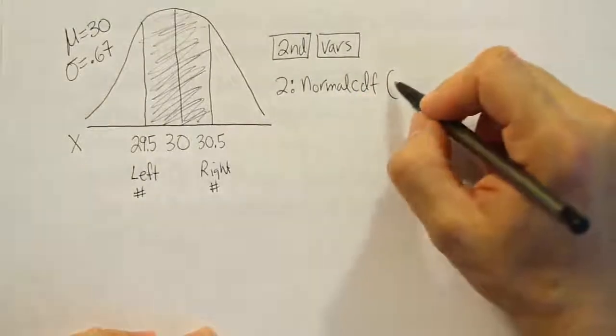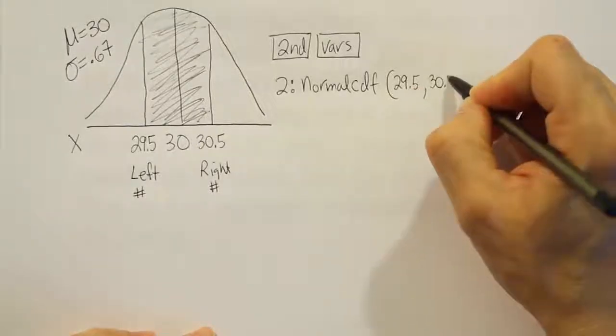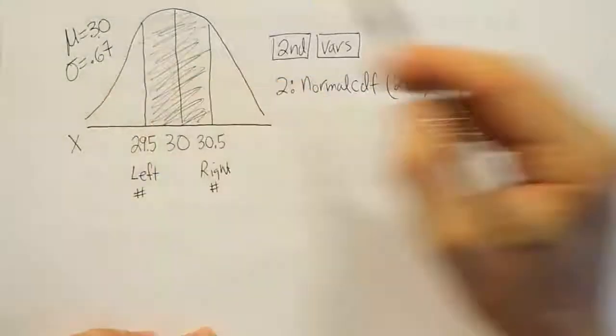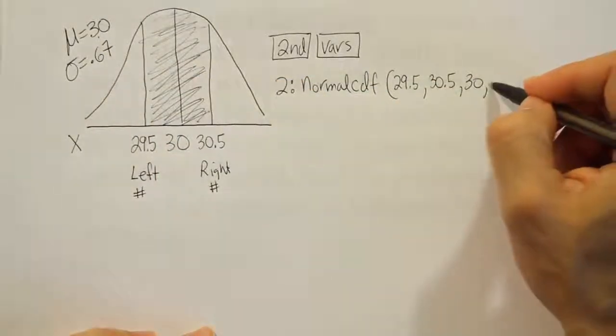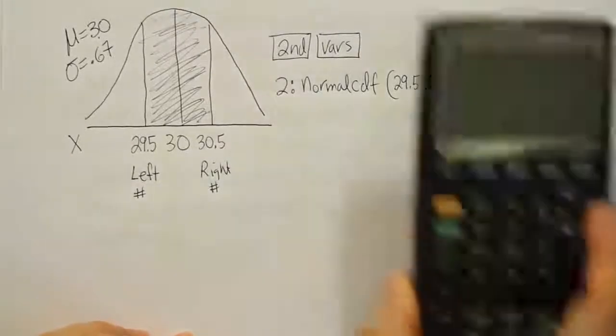Then enter in the left number, which is 29.5, comma the right number, which is 30.5, comma the mean, which is 30, comma the standard deviation, which is 0.67. Do all that, press enter, and you'll have your answer.